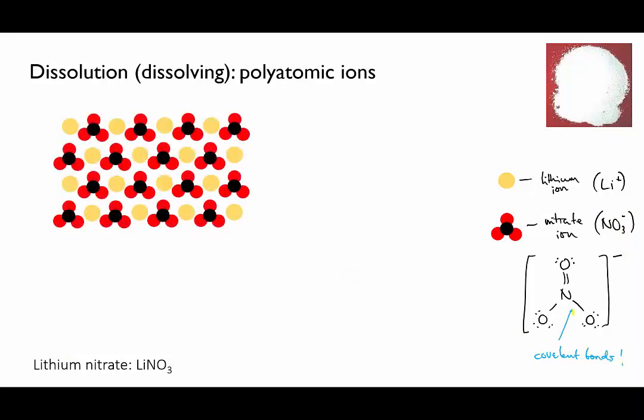Remember that the bonds within a polyatomic ion like nitrate are covalent. Nitrogen and oxygen are both non-metals with high electronegativity, so when they bond to each other, they do it covalently by sharing electrons. So although nitrate is an ion, within that ion there are covalent bonds. It's a polyatomic ion.